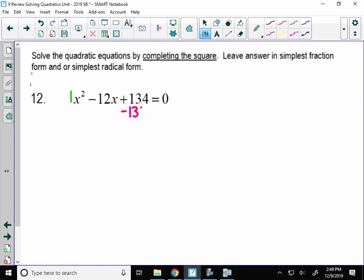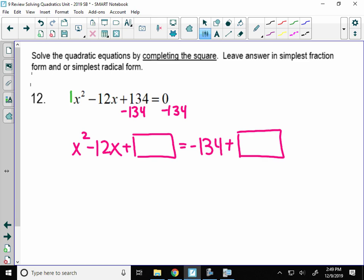I start by moving this 134 over to the right hand side. And what I do is I replace that 134 with a square or a box, whatever you want to call it. So if I add a box to the left, I have to add a box to the right.